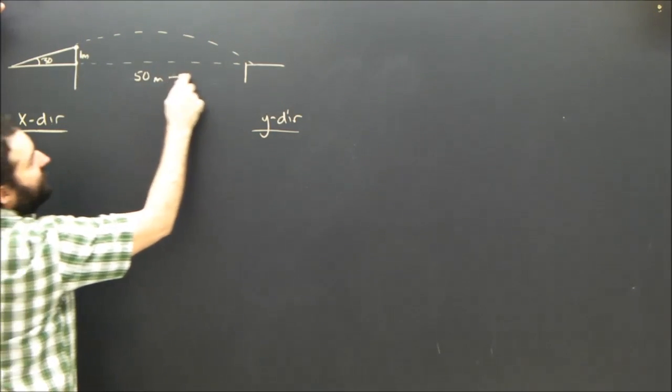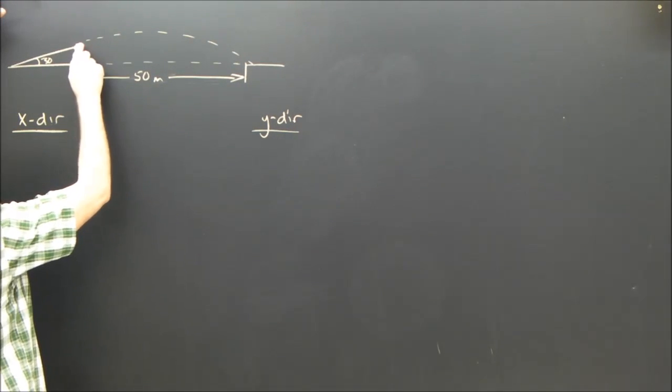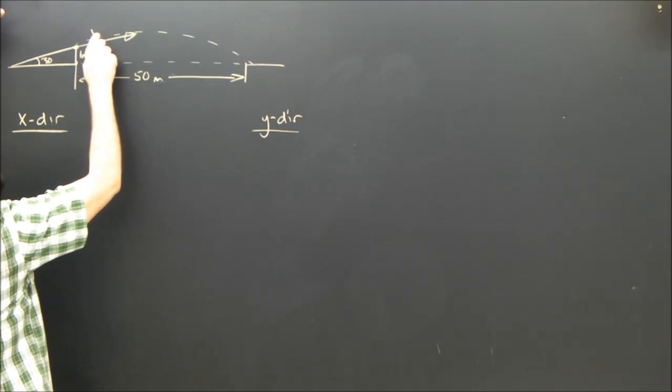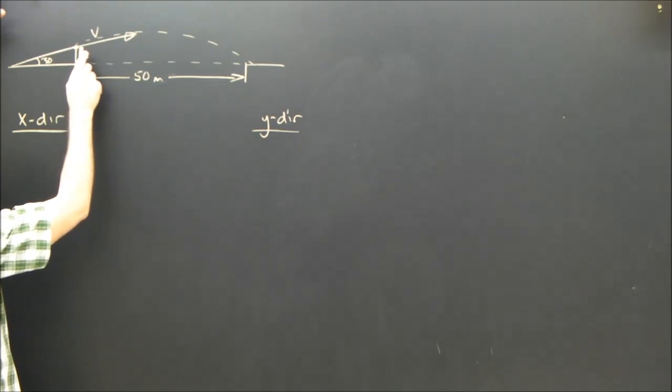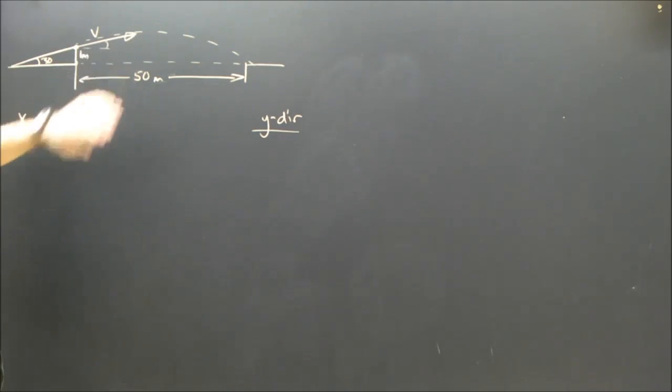No big deal. The width of Springfield Gorge is 50 meters, and we're not told the velocity. That's what we're trying to find. And we do know the angle, though, must obviously be 30 degrees, because he's coming off the ramp. So this angle is also 30 degrees.